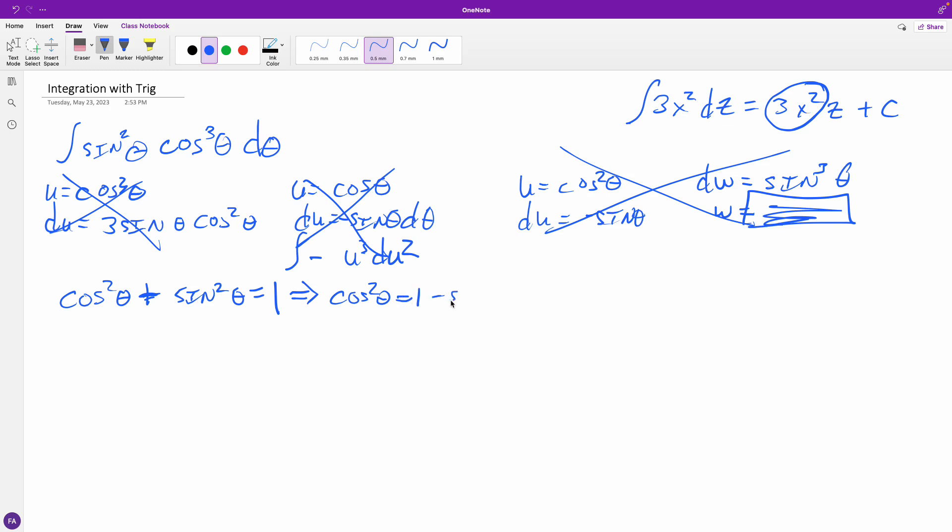So one minus sine squared theta. All right, there we go. Now, how is that useful? Well, I can take this original one here, and I can write this as sine squared theta cosine squared theta cosine theta d theta. You're like, how is that useful? It's just expanding it. Yes, but now, if you notice, we have this piece and this piece that match, so now I can do this. All right, so sine theta, and then one minus sine squared theta, and cosine theta.